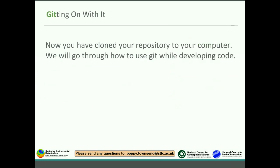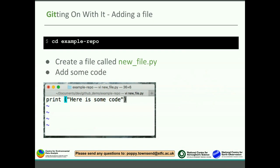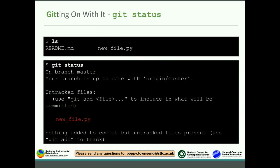Now you've cloned the repository to your computer, let's go through how to use Git while developing code. First, let's add a file. We change directory into 'example-repo', create a file called 'new_file.py', and add some basic code — just a print statement. We can then check what we've done using git status. If we do 'ls', we can see we've got the README which was there before, and this new new_file.py. Git status tells you that you're on the master branch and up to date with the remote repository, but it also flags untracked files highlighted in red — it tells you something here is different from your committed history, and it even suggests running 'git add' to include it.